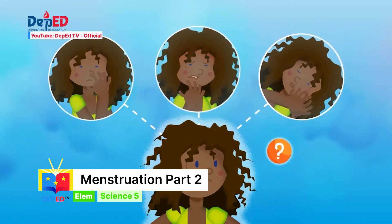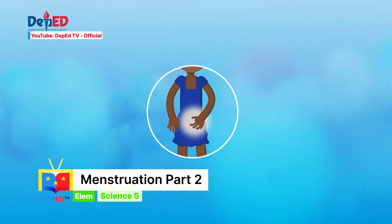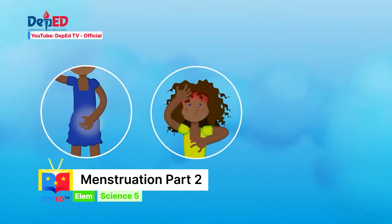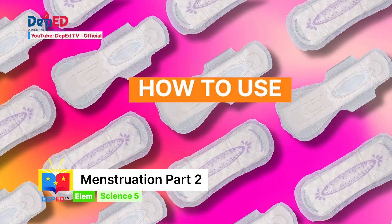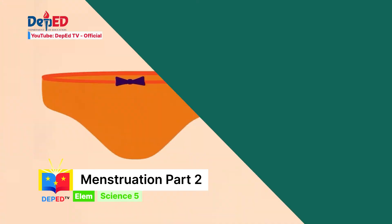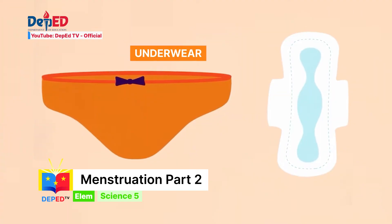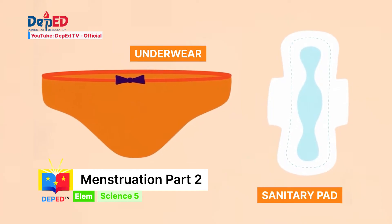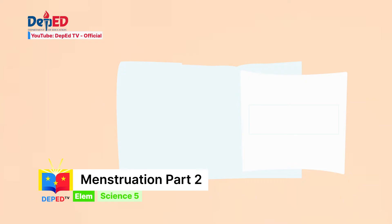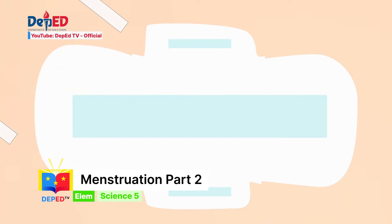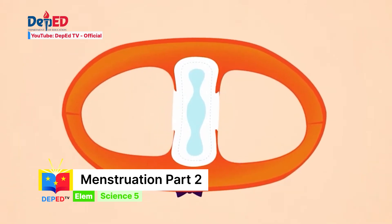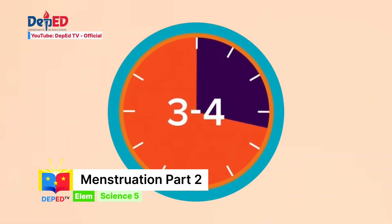Hi girls! You are probably nervous and scared with what we've discussed today, but don't worry — it is something that every single girl goes through. In preparation for that, today I'm going to teach you how to use sanitary pads. We will be needing underwear and a sanitary pad of your choice. Step 1: Remove the pad from the wrapper — you may want to keep it to dispose of later. Step 2: Remove the thin sticky strip from the back and place the pad on your underwear. Step 3: Change your pad every few hours or when it's soaked with blood.